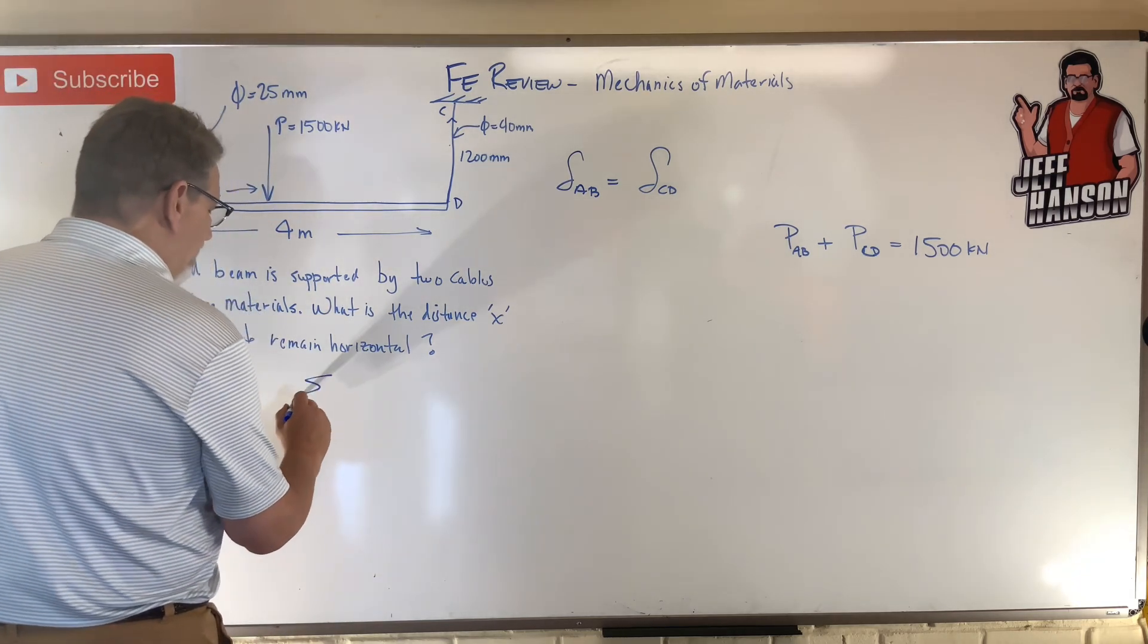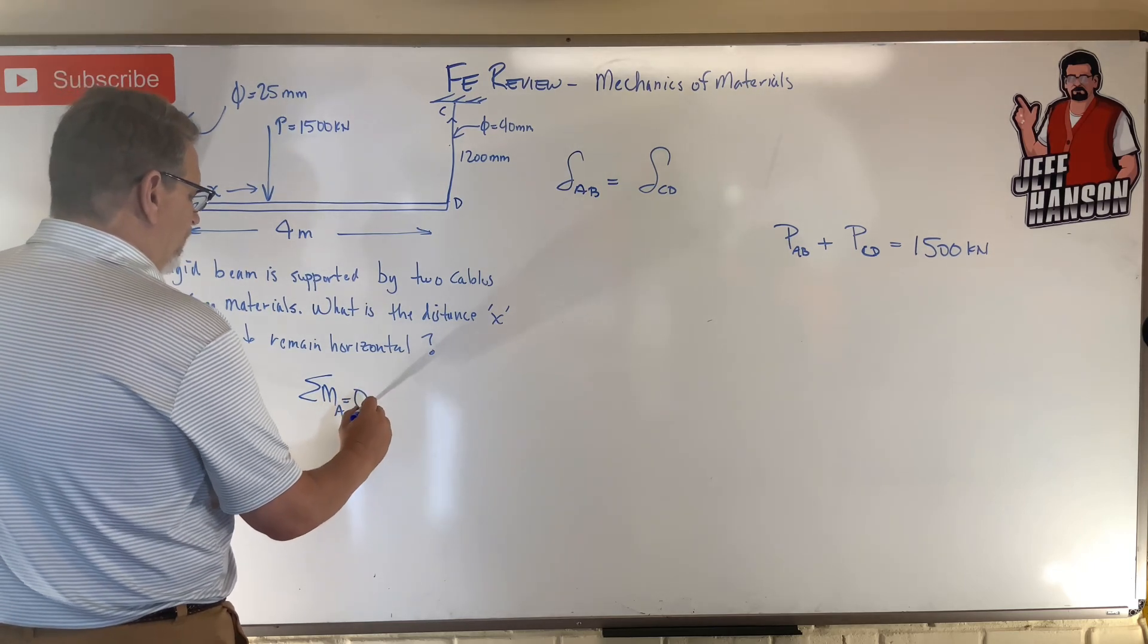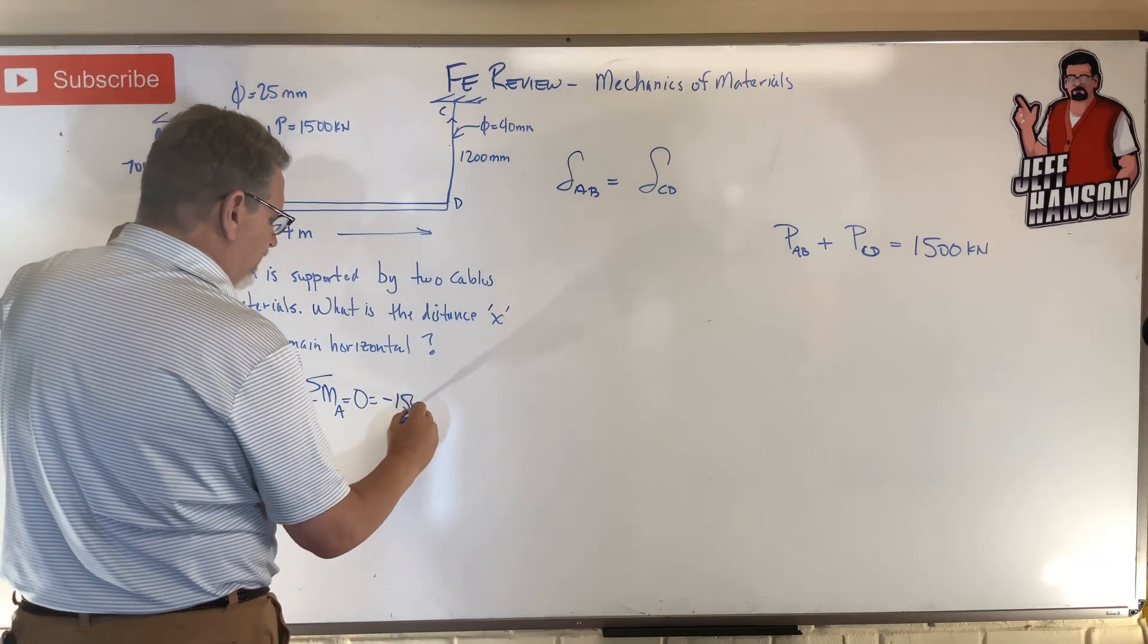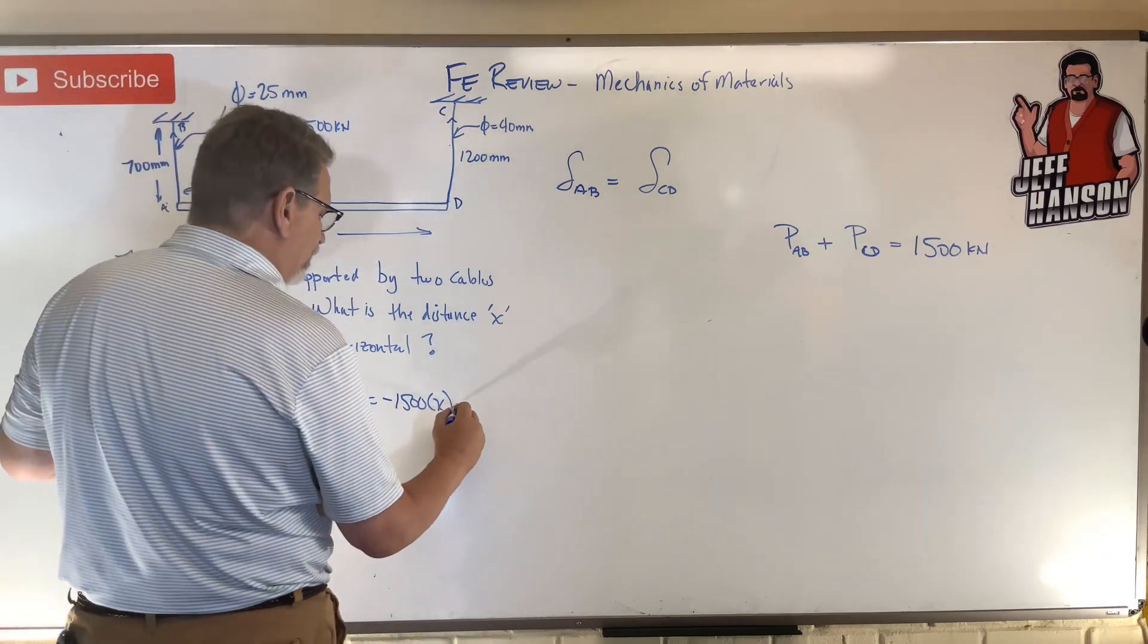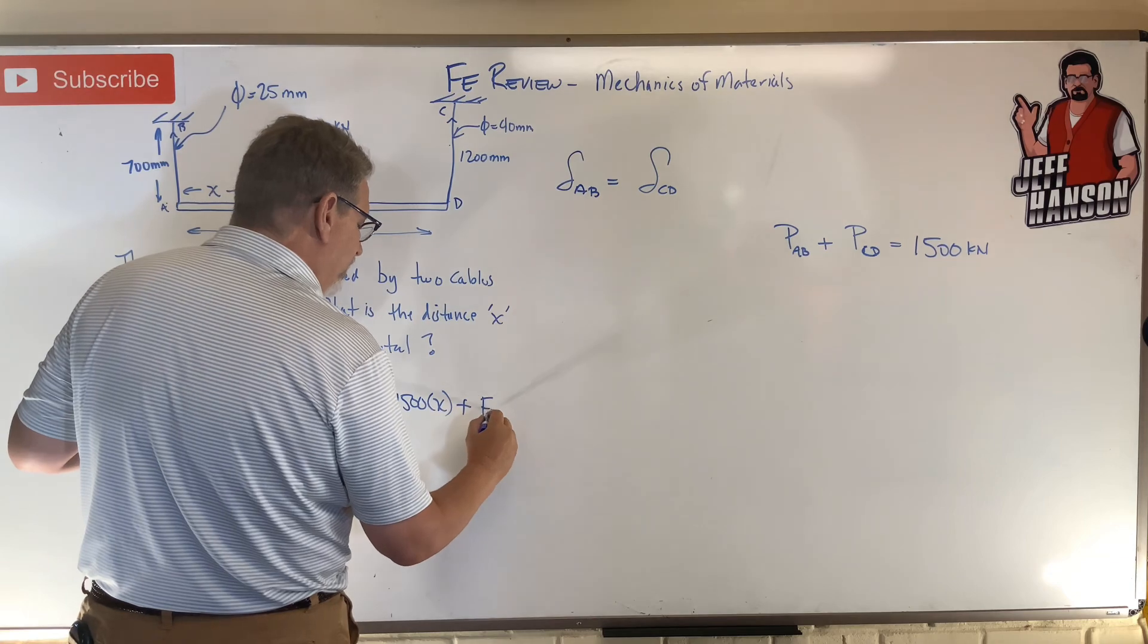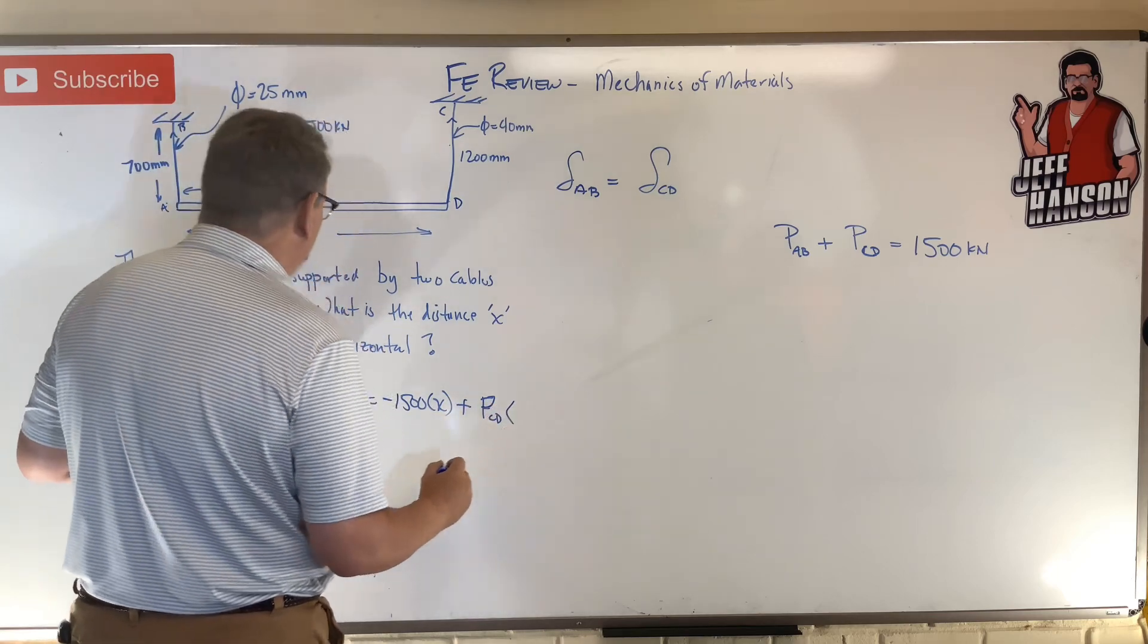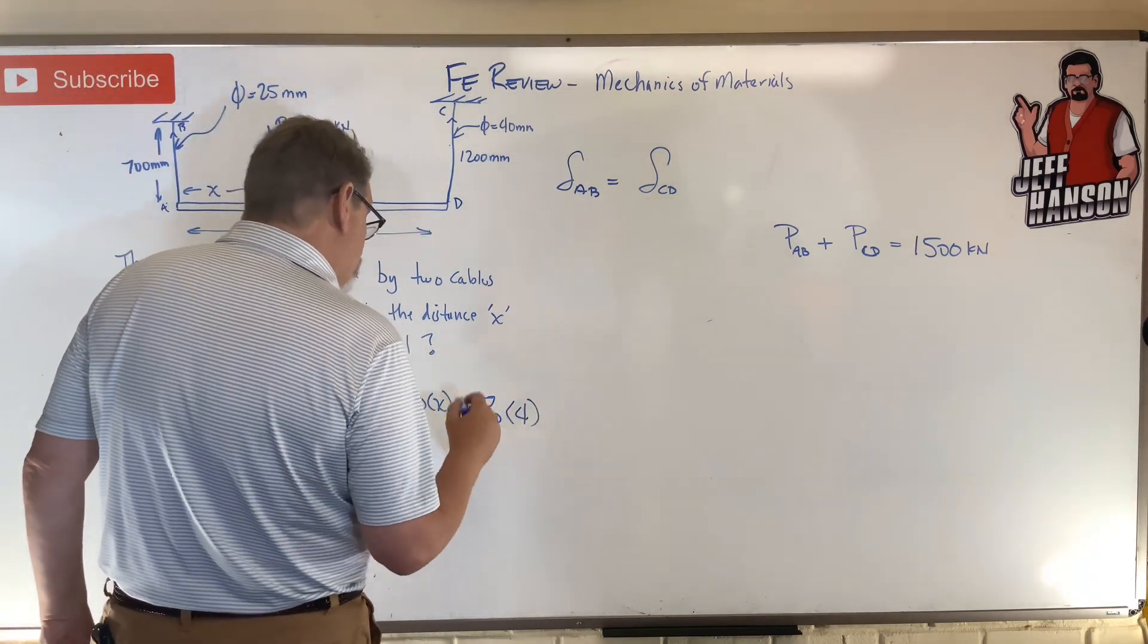I think I can just do a little statics here and I can do sum of the moments about, let's do point A here. We get: this one gets knocked out, 1500 rotates negative, so minus 1500 times how far away X, minus, plus going the other way, P_CD times how far away, 4.